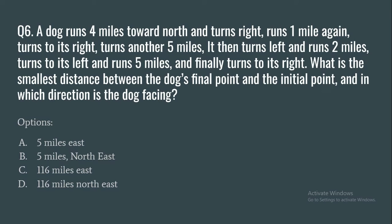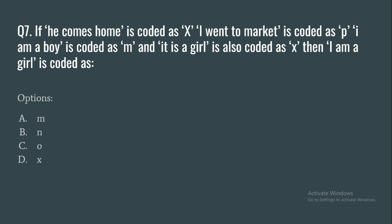Question 6: A dog runs four miles north, turns right and runs one mile, turns right and runs five miles, turns left and runs two miles, turns left and runs five miles, and finally turns right. What is the smallest distance between the dog's final point and the initial point, and in which direction is the dog facing? Options: 5 miles east, 5 miles north-east, √116 miles east, or √116 miles north-east.